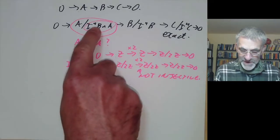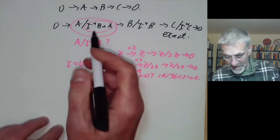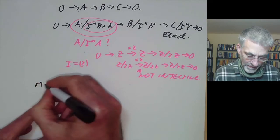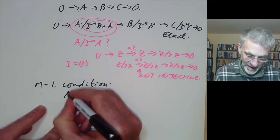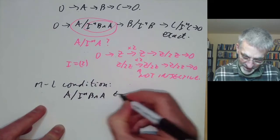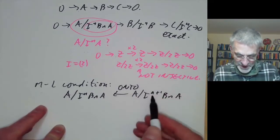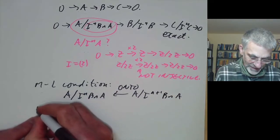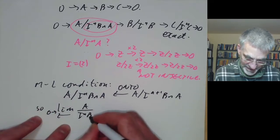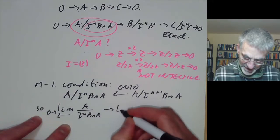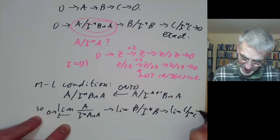We want to take the inverse limit of these sequences and show it is exact. Recall that's not always true — there's the Mittag-Leffler condition to worry about. In this case, the Mittag-Leffler condition automatically holds because A/(I^{n+1} B ∩ A) maps onto A/(I^n B ∩ A). So the inverse limit 0 → lim(A/(I^n B ∩ A)) → lim(B/I^n B) → lim(C/I^n C) → 0 is exact.